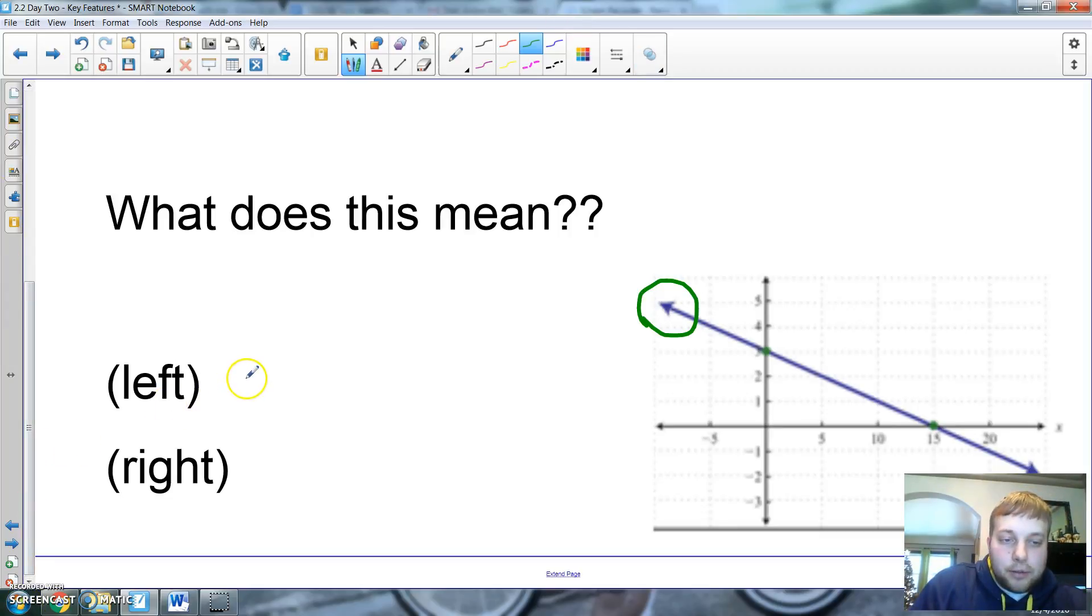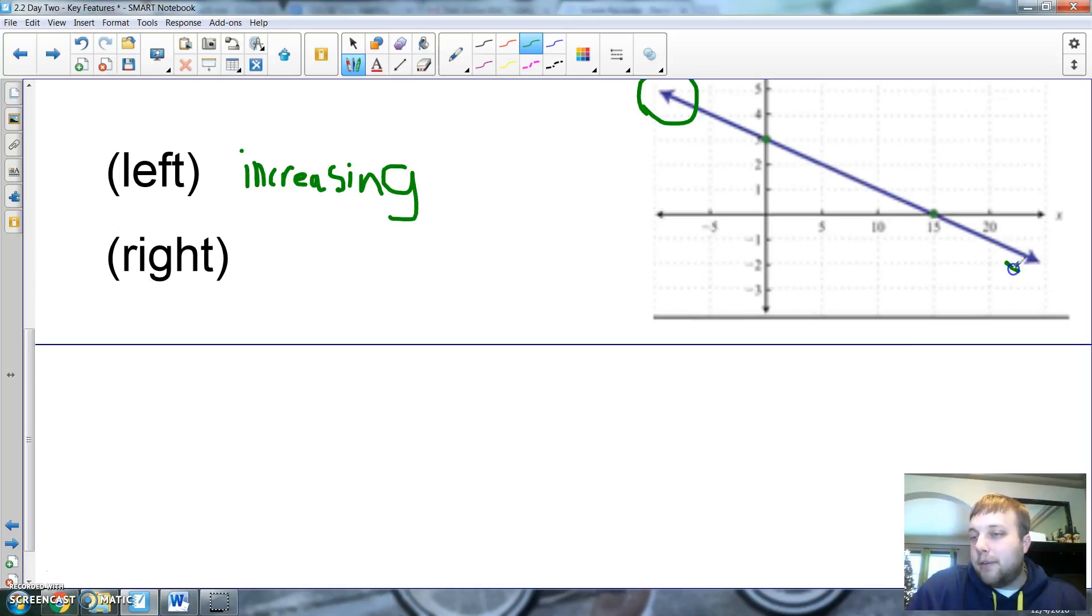So, as it keeps moving to the left, so if this thing was moving to the left, it would be going up. What about my end behavior on the right? Can we see this? What about this end behavior down here? What's going on down here? And as I'm going to this way, if I go down this way, I am going decreasing. Decreasing. That's pretty easy, isn't it? End behavior?